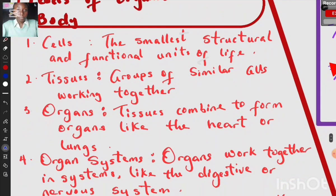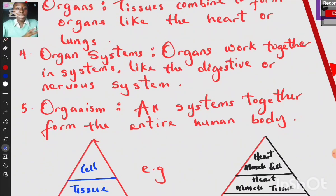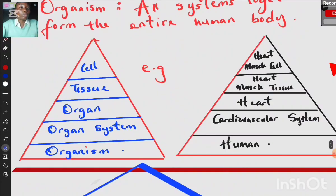Then we have organs — these are tissues combined together to form organs like the heart or lungs. Fourth, we have organ systems — organs work together in systems like the digestive system or the nervous system. Systems are simply groups of organs working together to perform a specific function. Lastly, an organism — all systems together form the entire human body.